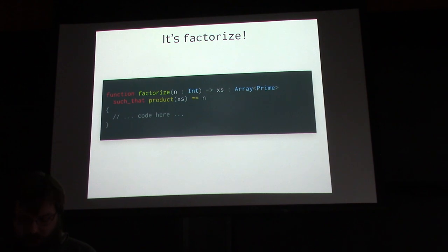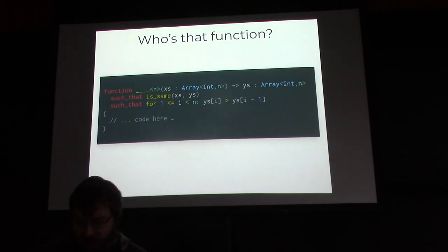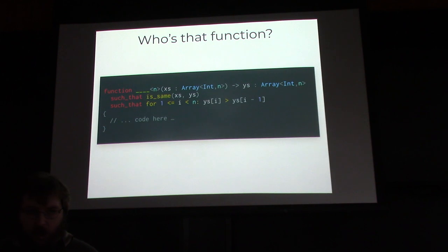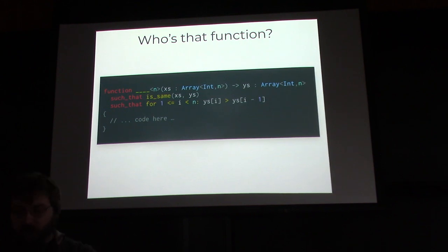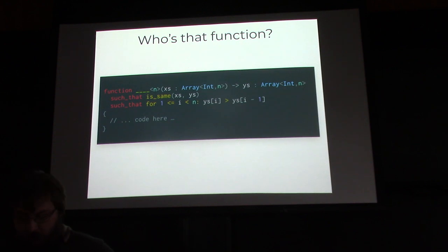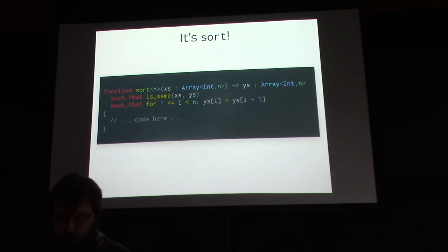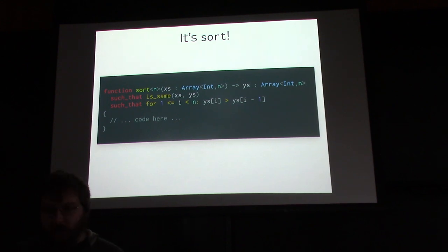Here's another game: this is a function that takes an array of integers of length n and returns an array of integers of the same length with the same elements, such that the elements are now in ascending order — for every i between 1 and n, every element is greater than the one preceding it. So this function has to be a sort function, because if you take an array and turn it into an array with elements in ascending order, you've sorted the array.